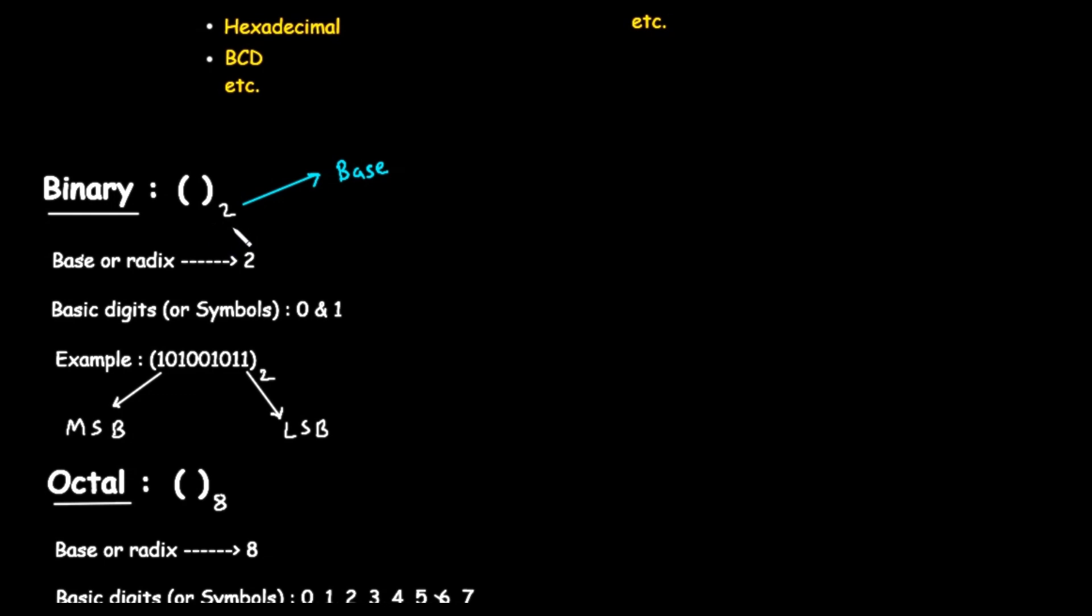This little 2 tells you that you are looking at a base 2 number. As the name binary suggests, bi meaning 2, the base or radix of this system is 2. This means the binary system uses only two unique digits or symbols. Those symbols are 0 and 1. That's it. Every number in the binary system is represented using only 0s and 1s.